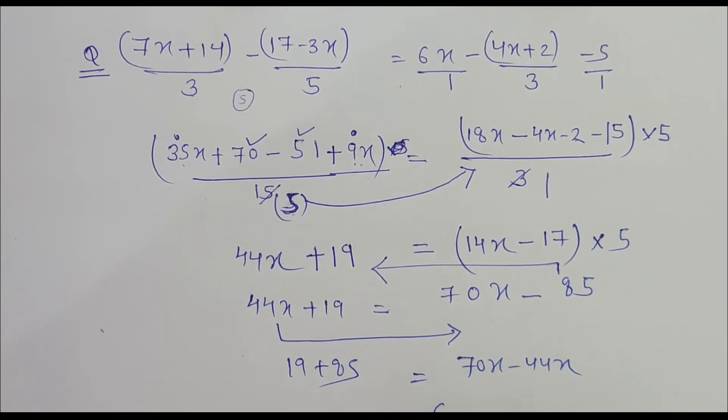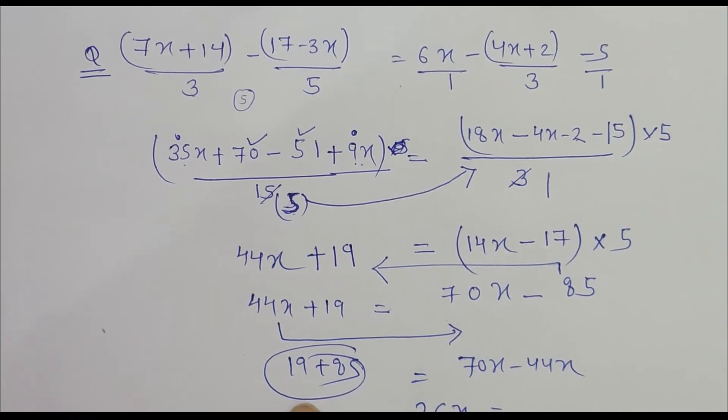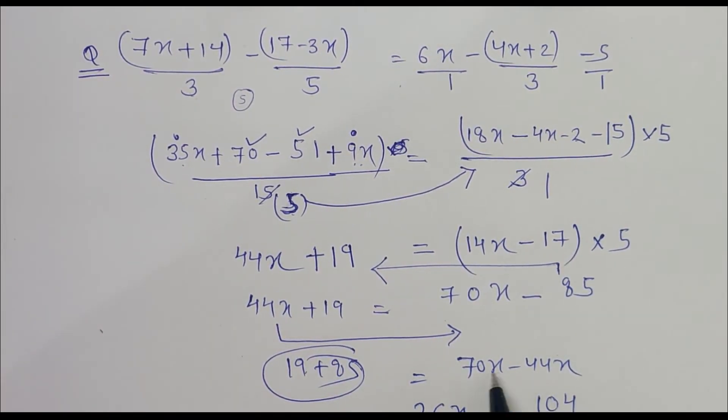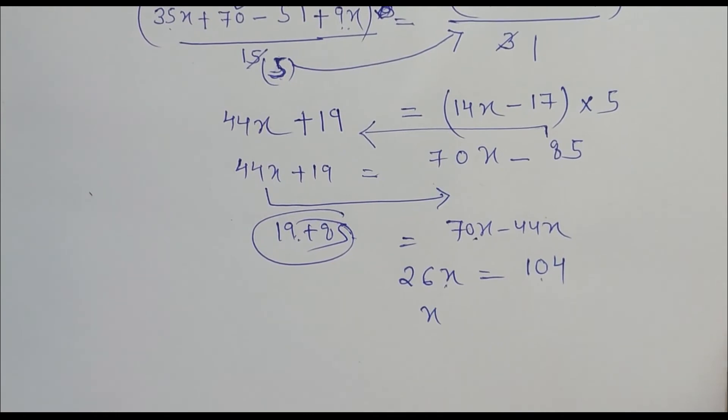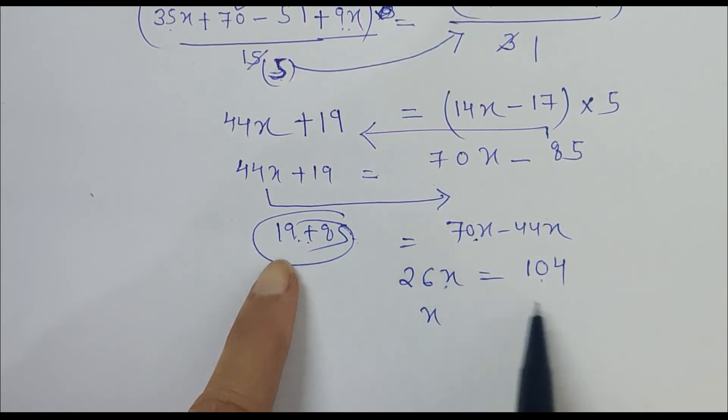This is equal to, when we add this, what do we get? 90 plus 14 is 104. So it is 104. So when we add, it is 104, and 26x when we subtract.